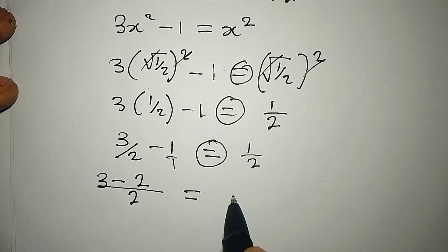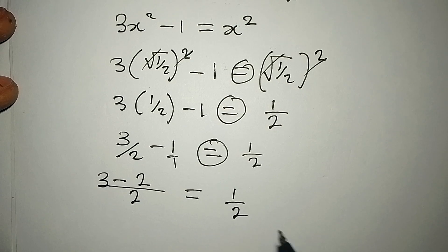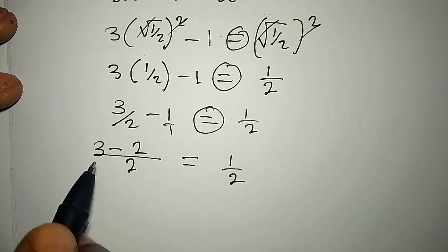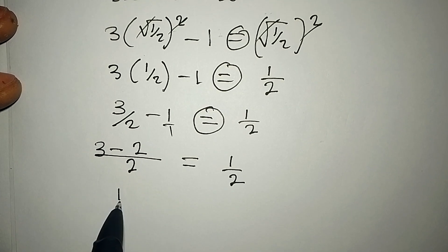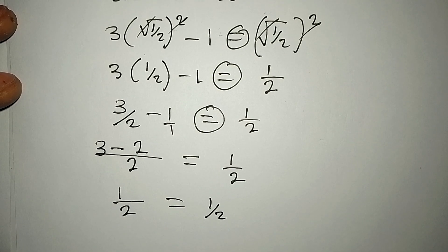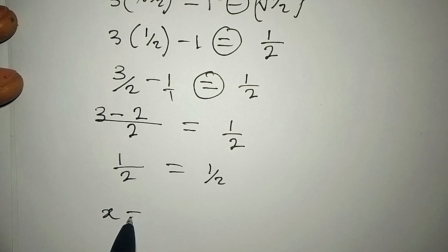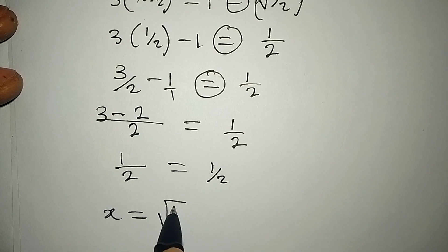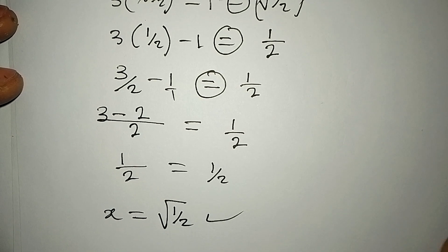Now can you see that this is equal to 1/2? Yes, because 3 - 2 will give 1, then this is over 2, and it's equal to 1/2. So this is to confirm that x = √(1/2) is satisfying.